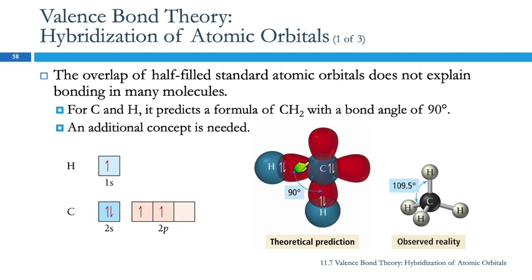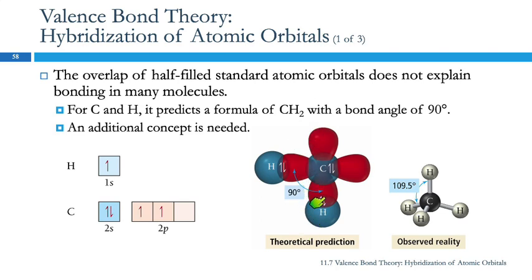What we've drawn is the s orbital — that's spherical, that's the blue one — and it has a pair of electrons in it. Then we have one of the p orbitals here in the x-axis, and that has one electron, so that can overlap with the half-filled orbital of the hydrogen. And then we have another p orbital in the y-axis that has one electron, and that can overlap with another hydrogen atom and form a bond. The third p orbital would be at this angle and it's not shown because it's empty.